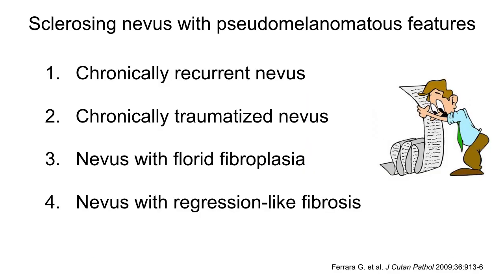Sclerosing nevus is also similar morphologically and in histopathology to a recurrent nevus, a traumatized nevus, a nevus with florid fibroplasia, and aspects of regression. In fact, it is almost impossible to distinguish these entities from the sclerosing nevus with pseudomelanomatous features.